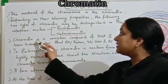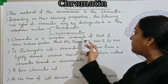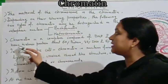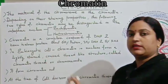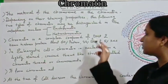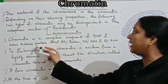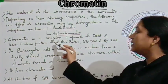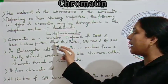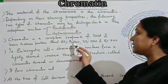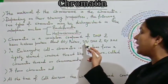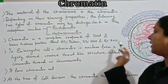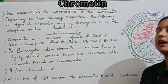Chromatin is a complex compound of DNA and basic histone protein. It is about 60% protein, 35% DNA, and 5% RNA.